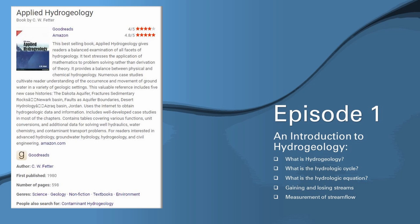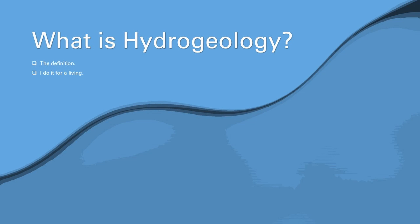The introduction to hydrogeology will cover what hydrogeology is, what the hydrologic cycle is, and what the hydrologic equation is. I'm going over very basic material — not too in depth — though later in the book we go more in depth on the hydrologic equation. We'll also go over gaining and losing streams and measurement of stream flow. Hydrogeology is basically the study of geologic materials such as soils and rocks and their ability to transmit or retard water.